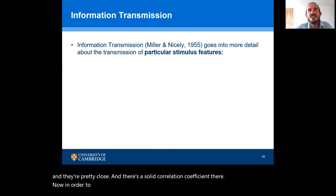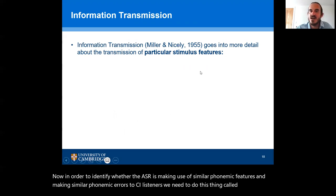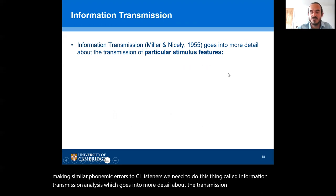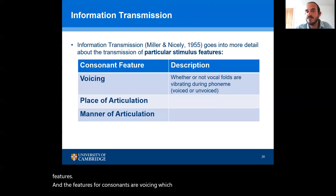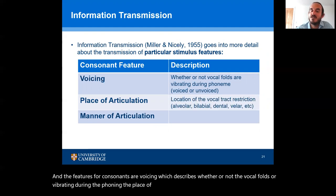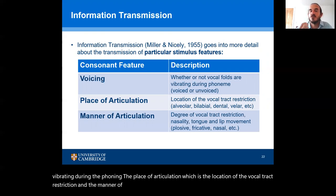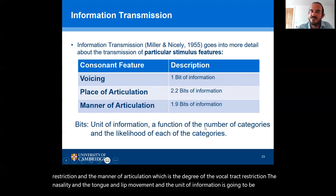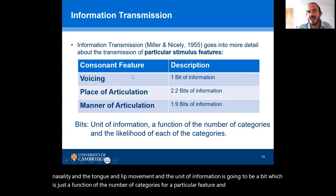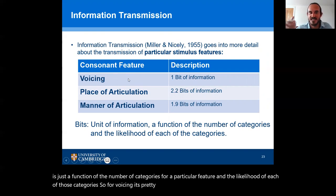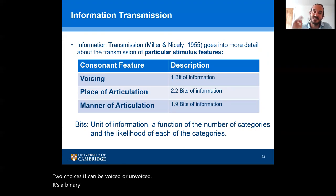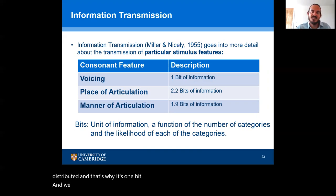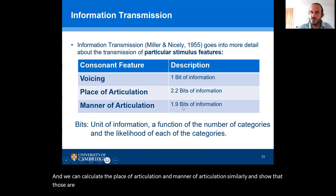In order to identify whether the ASR is making use of similar phonemic features and making similar phonemic errors to CI listeners, we need to do information transmission analysis, which goes into more detail about the transmission of particular stimulus features. The features for consonants are voicing — whether the vocal folds are vibrating during the phoneme — place of articulation, which is the location of the vocal tract restriction, and manner of articulation, which is the degree of the vocal tract restriction, the nasality, and the tongue and lip movement. The unit of information is the bit, which is a function of the number of categories for a particular feature and the likelihood of each category. For voicing it's intuitive: there are two choices — voiced or unvoiced — so it's one bit. Place of articulation is 2.2 bits and manner of articulation is 1.9 bits.